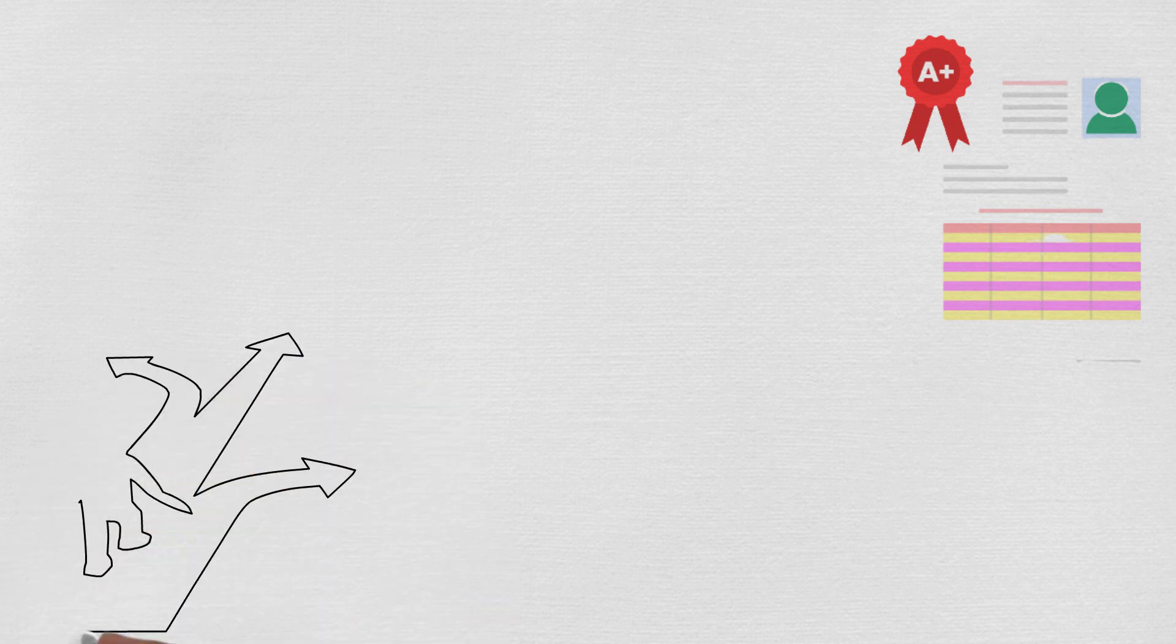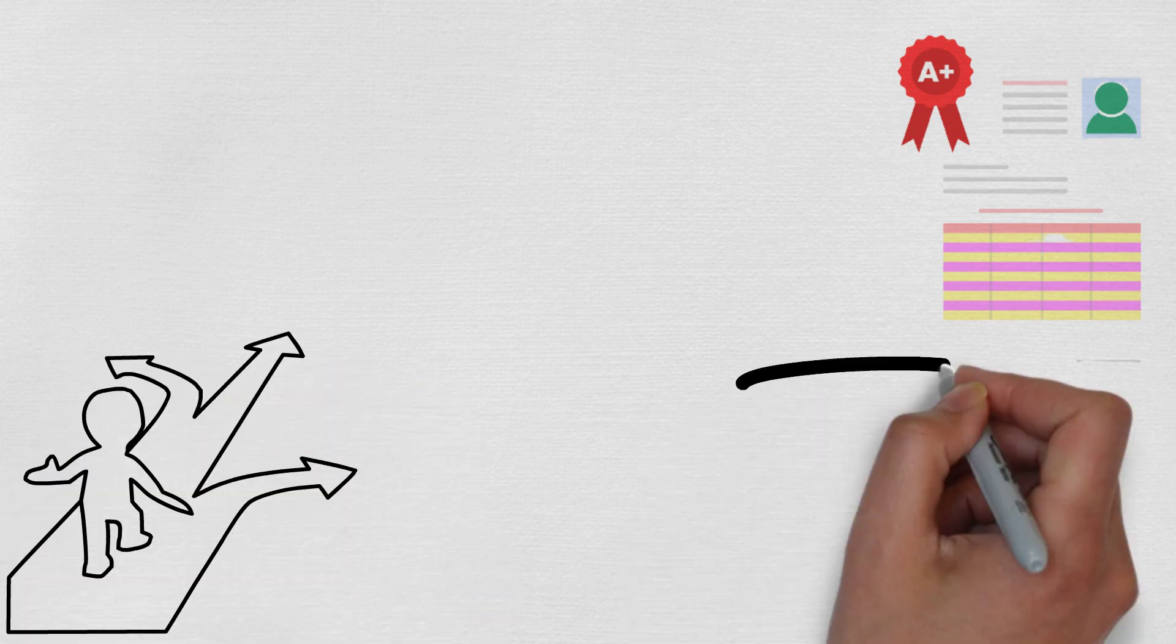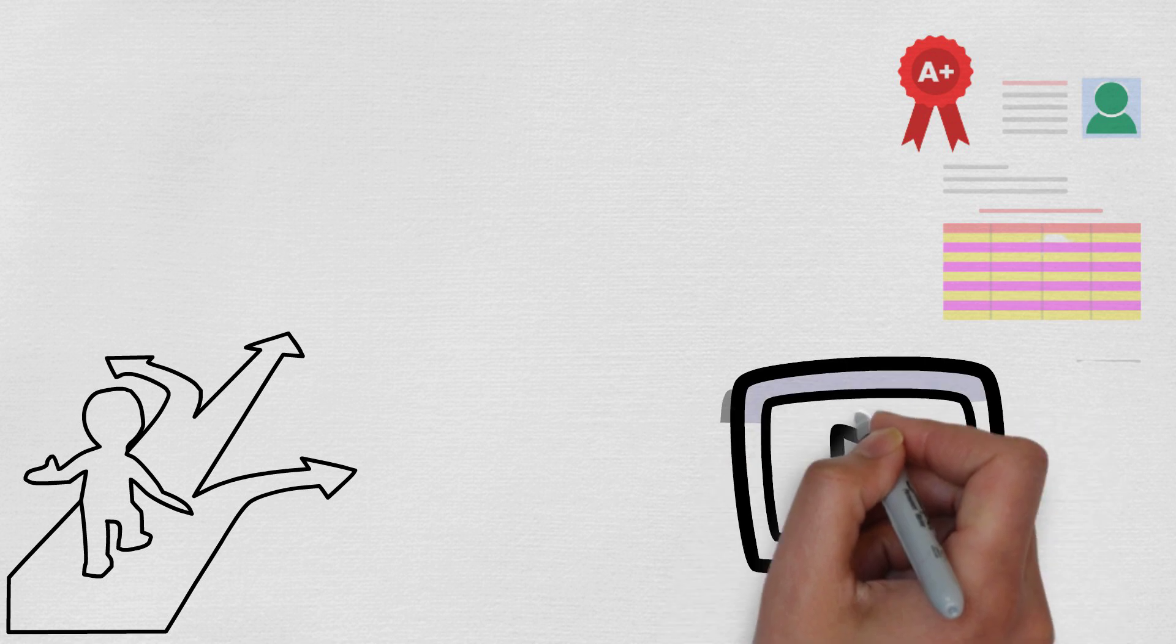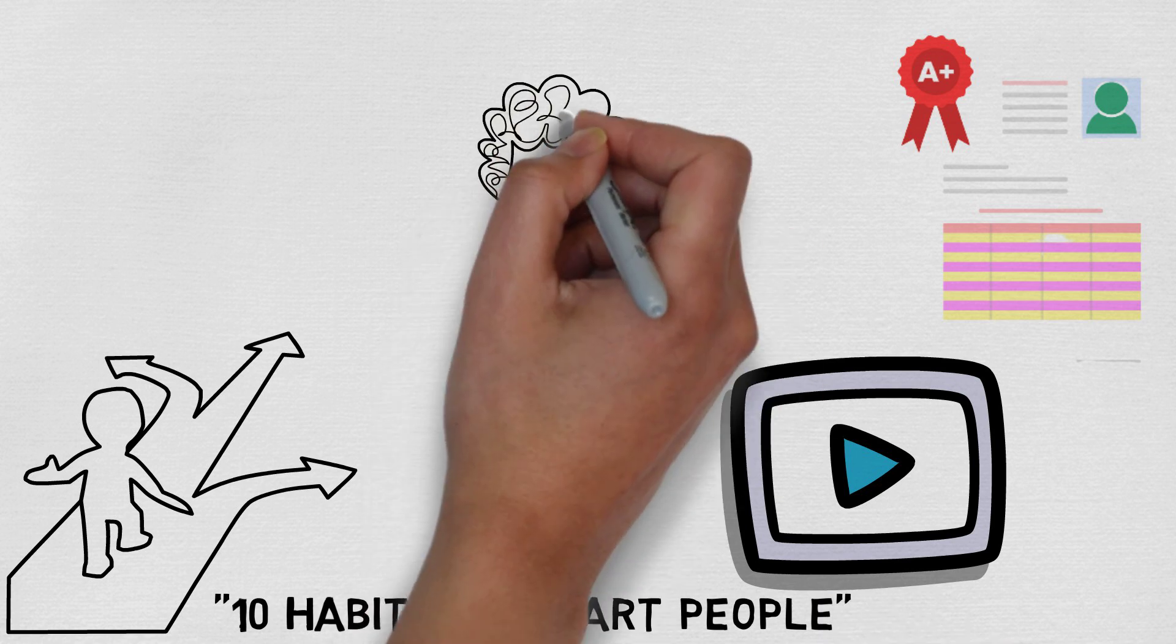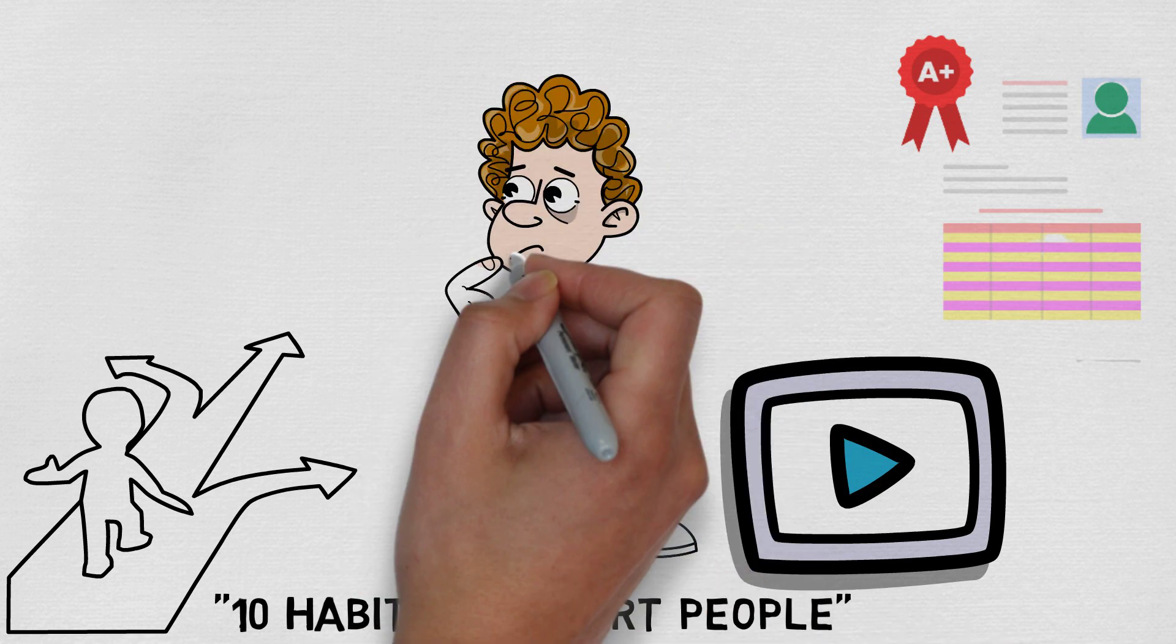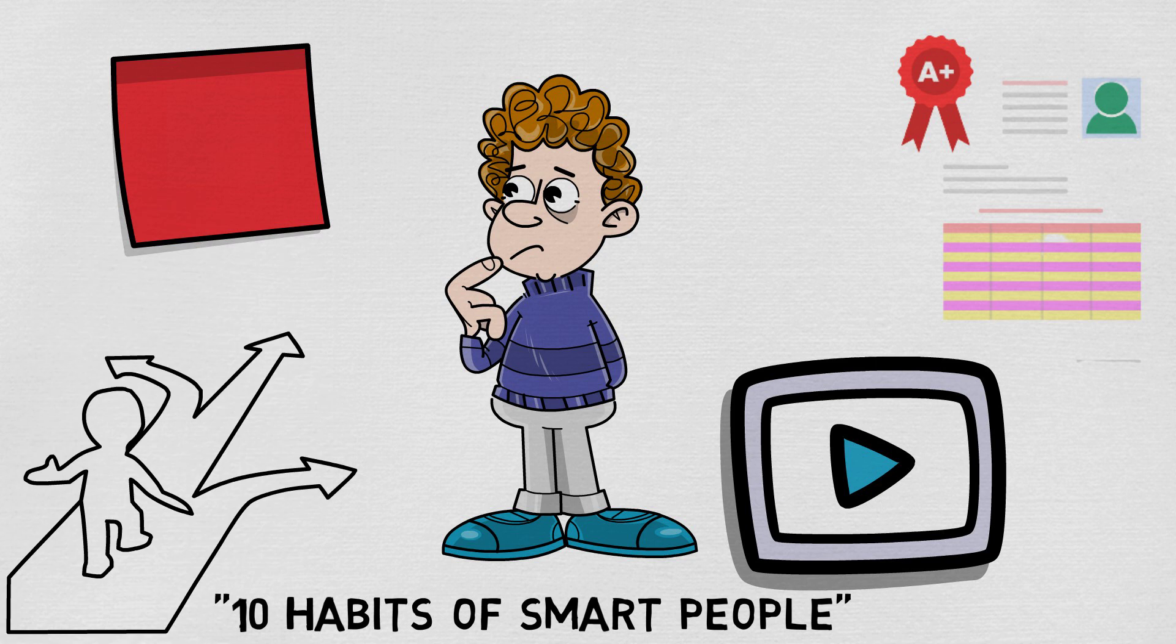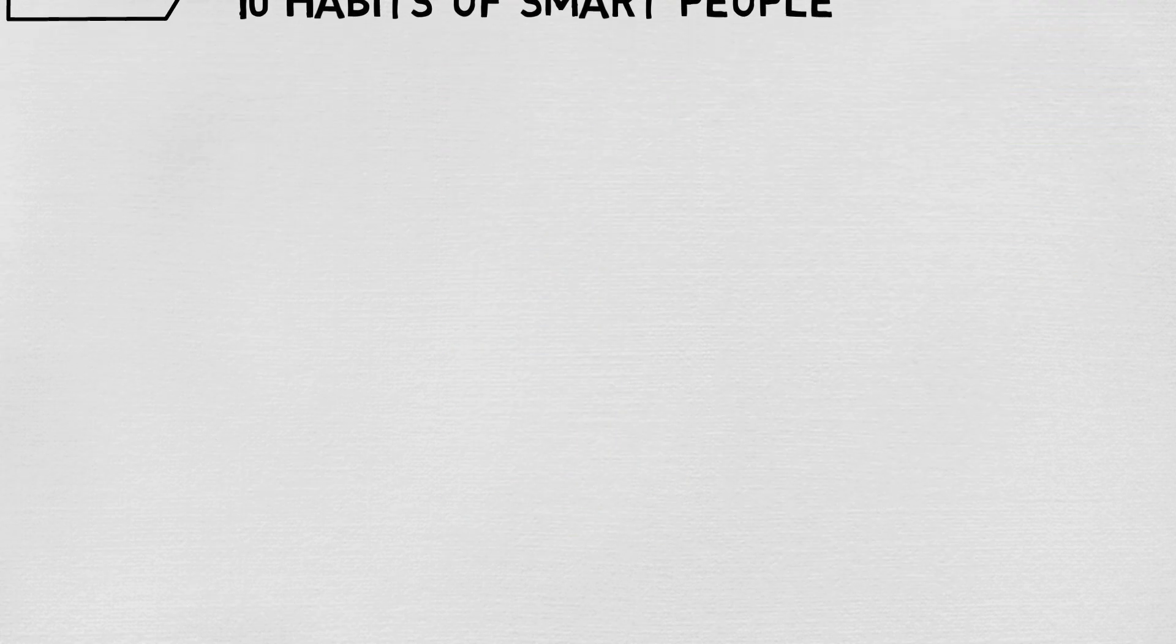Most of us associate straight A's with being intelligent. While grades could play a part, there are a lot of other factors that show someone's intelligence. If you aren't clear on the difference between being smart and intelligent, take a look at my other video, 10 Habits of Smart People. If you're curious on how to spot an intelligent person, well here are 15 signs of an intelligent person. Maybe you'll be able to spot one at school or at work to help you on a project, I'm just saying.